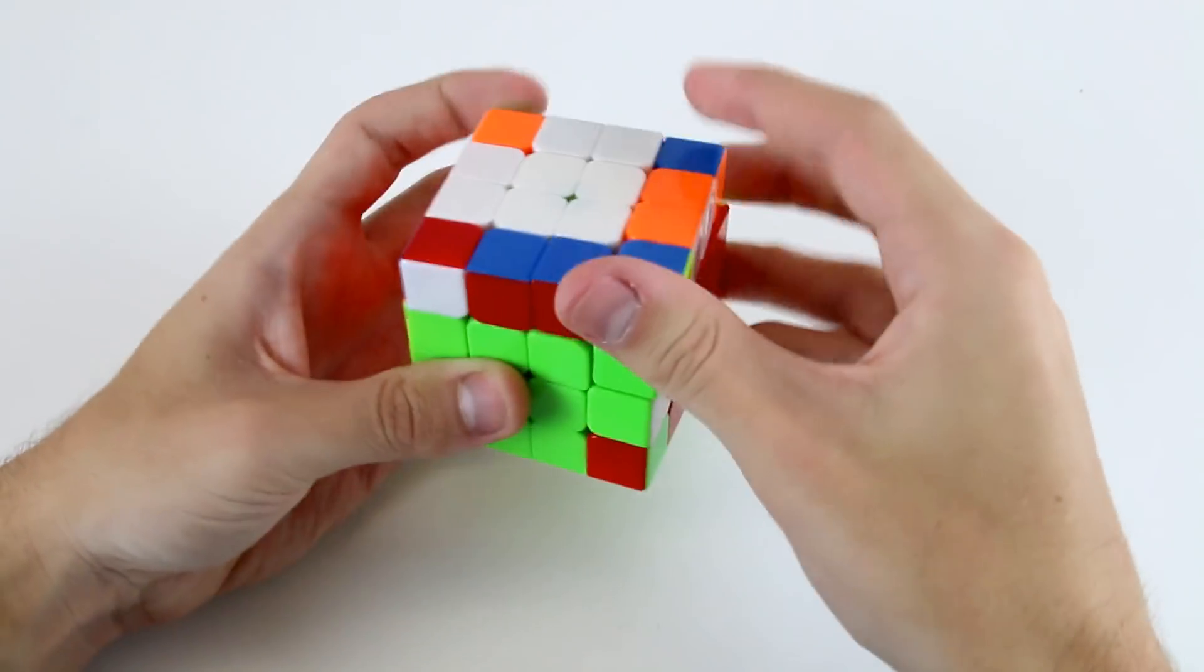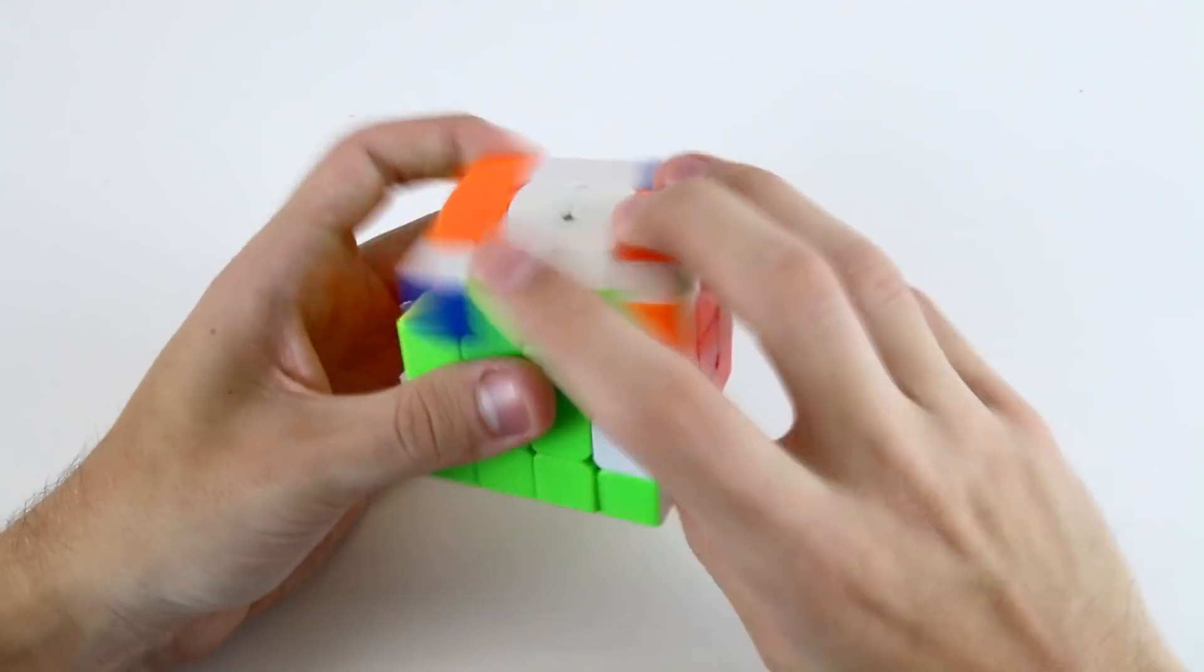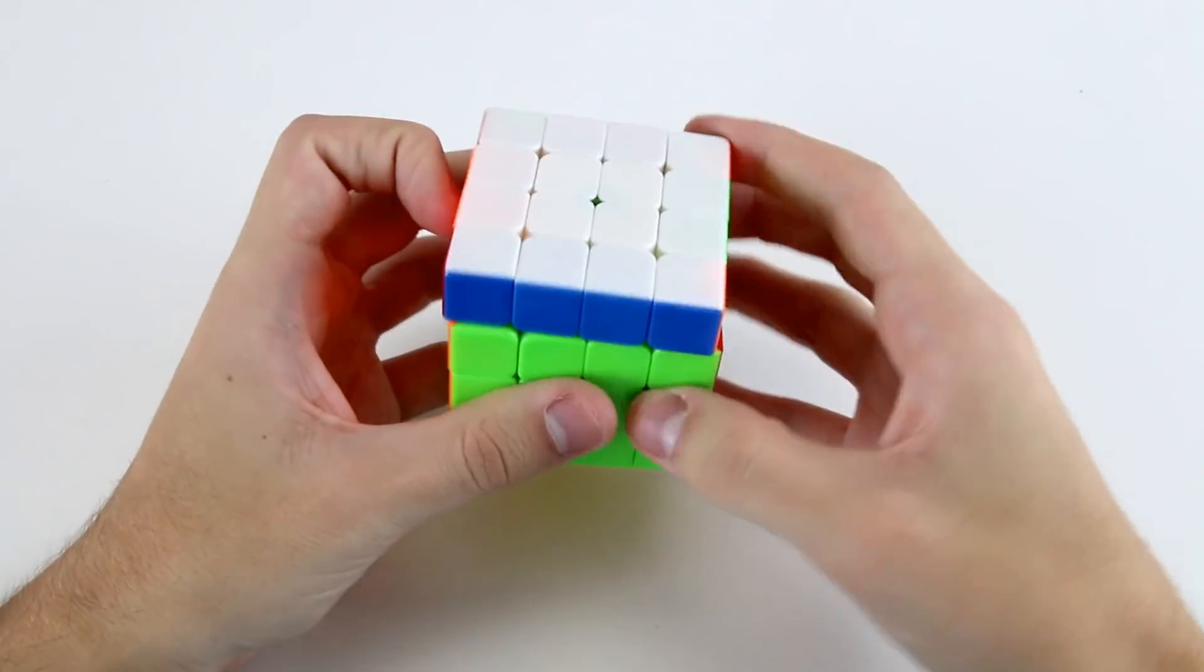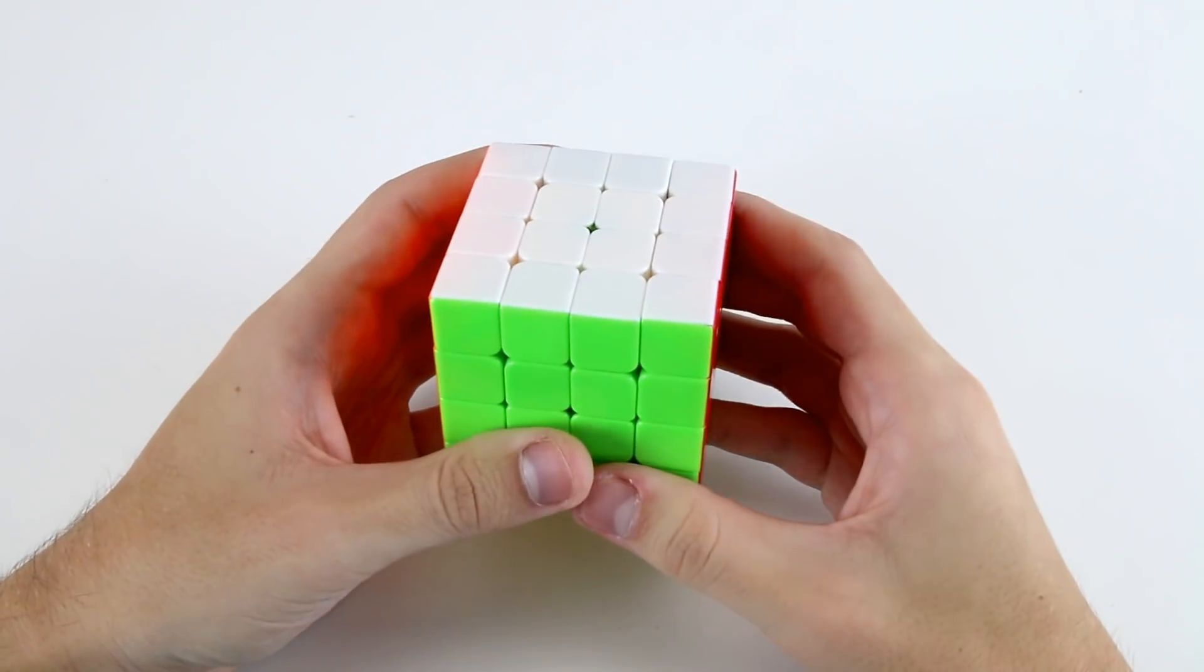Then I can insert this one first actually then rotate and insert this one, then solve this pair into the front here and then this pair into the back then OLL and then PLL. So that was a very easy three-by-three stage.